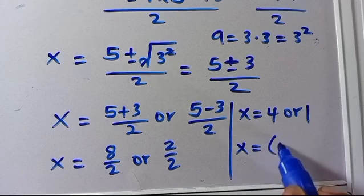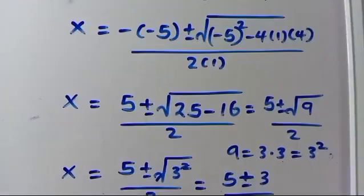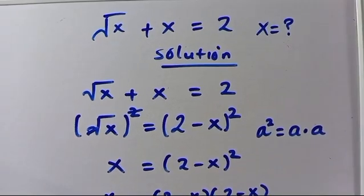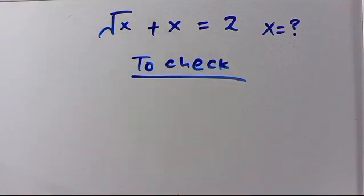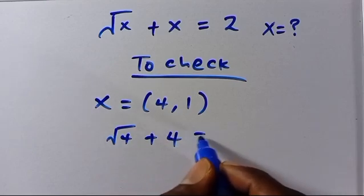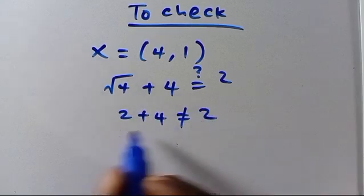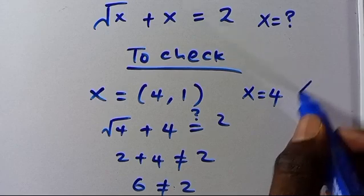So we have x equals 4 or x equals 1 as solutions. Let us now verify whether each value satisfies the original equation. Checking x equals 4: root 4 plus 4 — root 4 is 2, so 2 plus 4 equals 6, which does not equal 2. So x equals 4 is not correct.